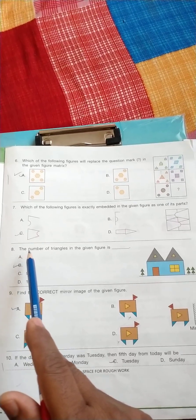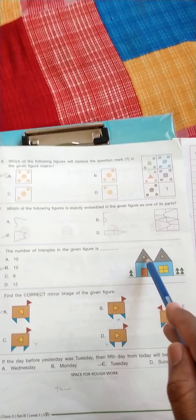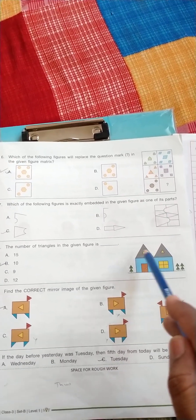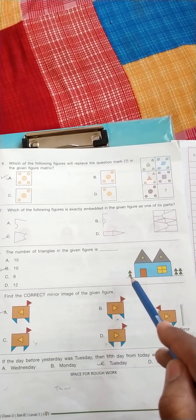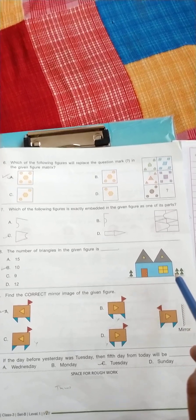Question number eight: the number of triangles in the given figure is - so here is two triangles, one is big and one small, and here is also same two triangles, so it means four, six, seven, eight, nine, ten. So the answer is B.